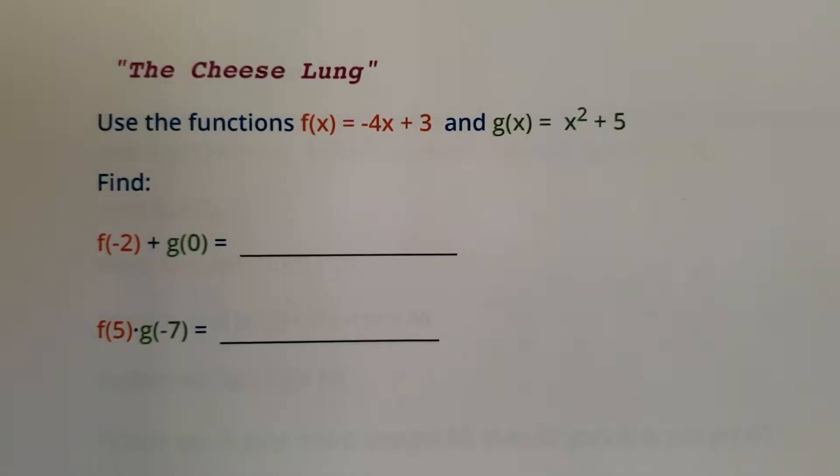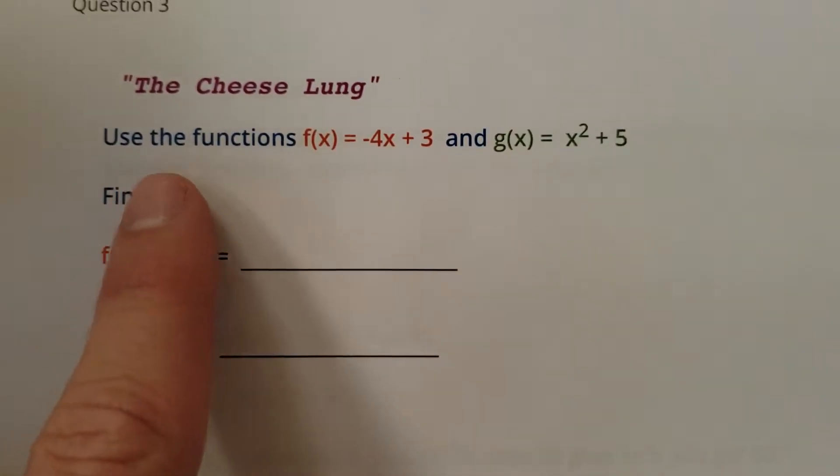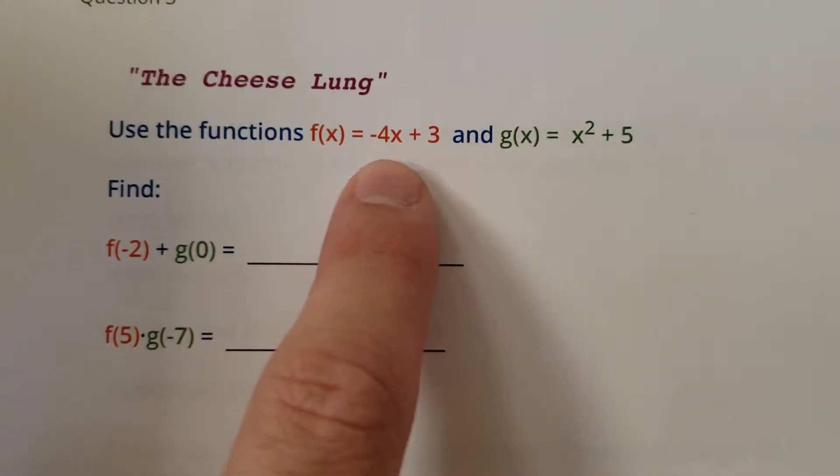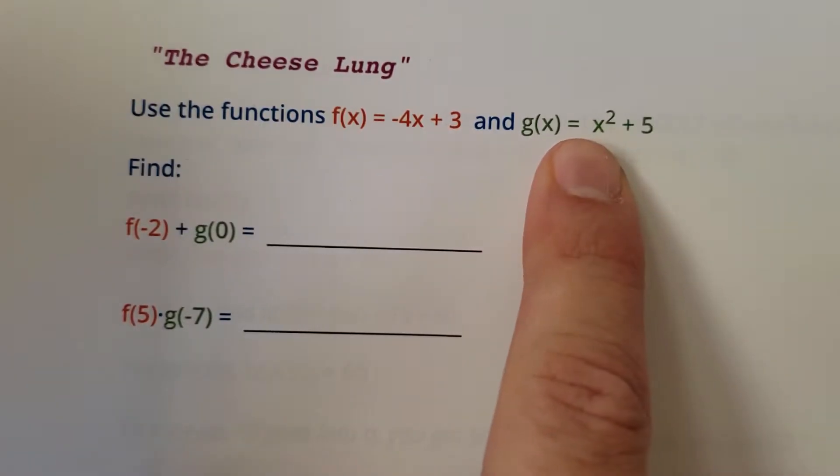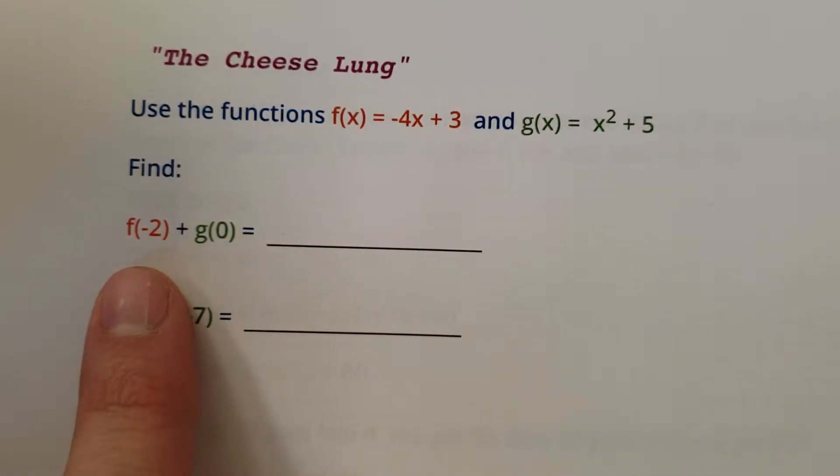Hello students. We got this problem called the cheese lung. That sounds really weird. Here we go. Use the functions f of x equals negative 4x plus 3 and g of x equals x squared plus 5. Find f of negative 2 plus g of 0.